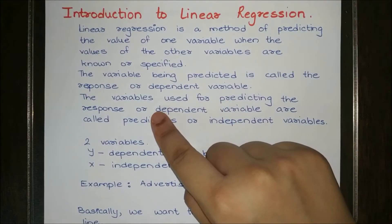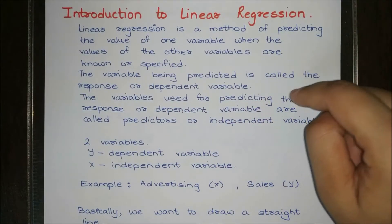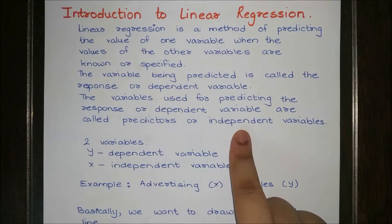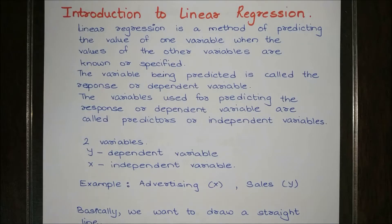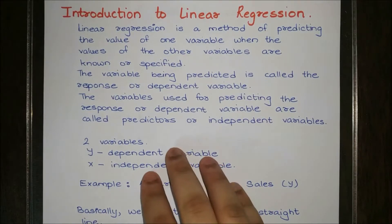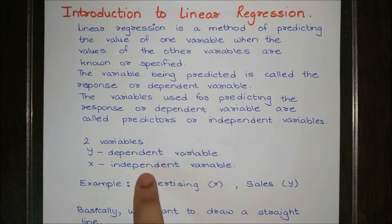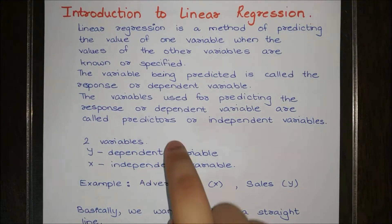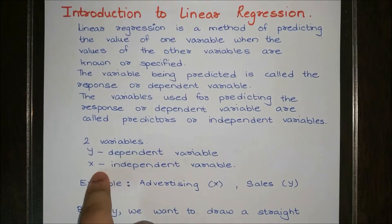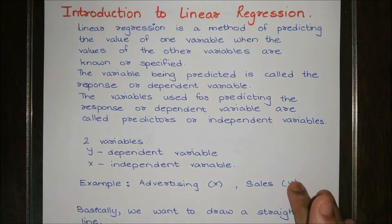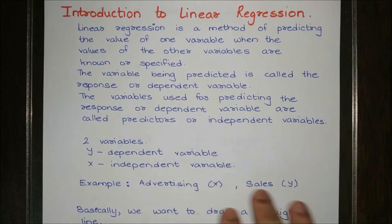The variable being predicted is called the response or dependent variable, and the variable we use for prediction is called the independent variable. We usually have two variables: y and x. y is the dependent variable — its value depends on x. For example, if x is advertising and y is sales, then sales depend on advertising.